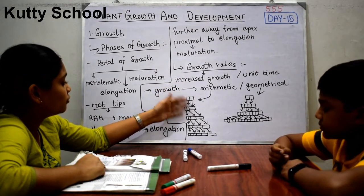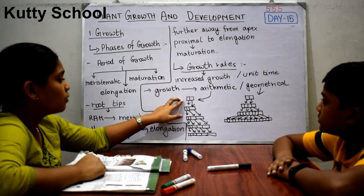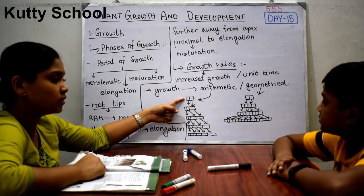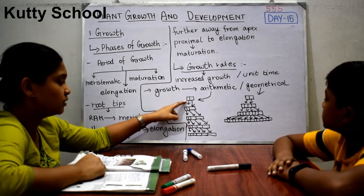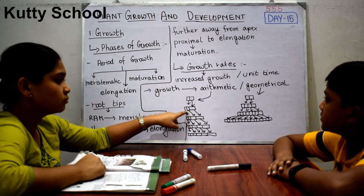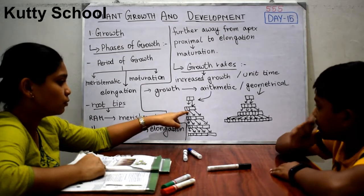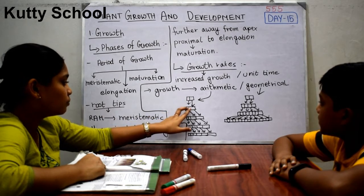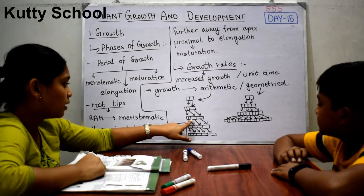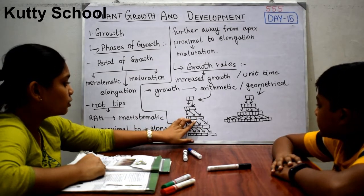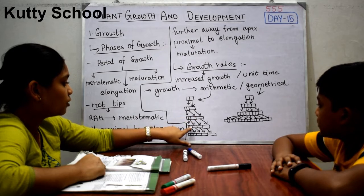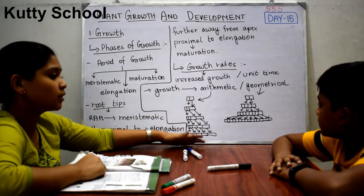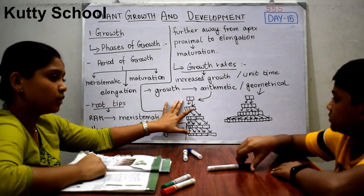In arithmetic growth, if you take two cells, one cell continuously divides and the other cell remains the same. For example, starting with two cells: one divides into two, the other stays the same; then in three cells one divides into two, the other two stay the same; in four cells one divides, others remain the same. This pattern — where only one cell divides continuously — is known as arithmetic growth.